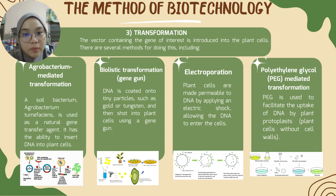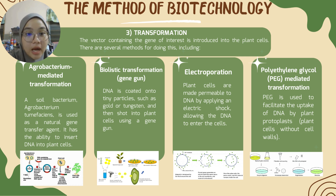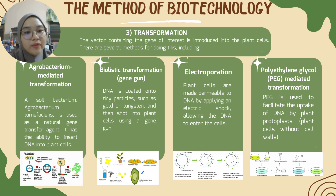Third, electroporation, where plant cells are made permeable to DNA by applying an electric shock, allowing the DNA to enter the cell. And lastly, polyethylene glycol-mediated transformation is used to facilitate the uptake of DNA by plant protoplasts, which are plant cells without cell walls.